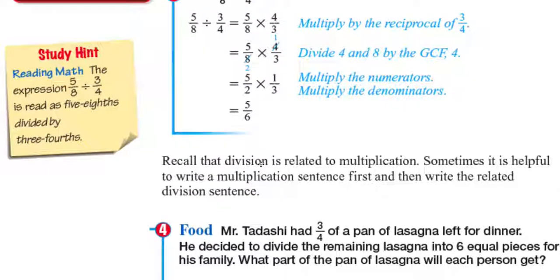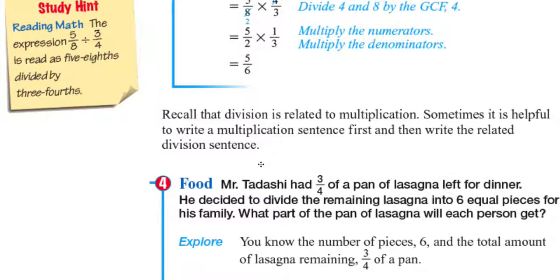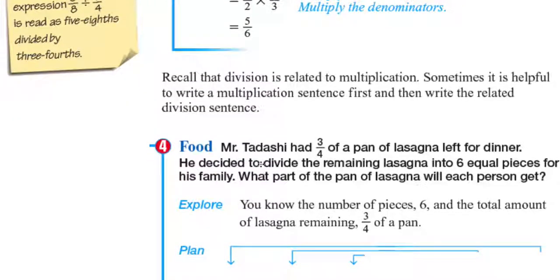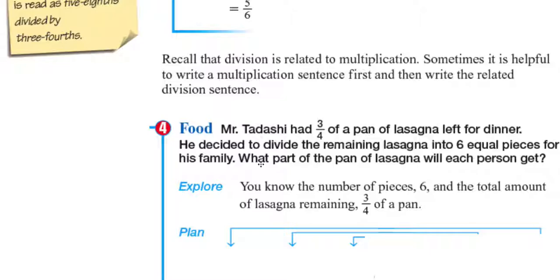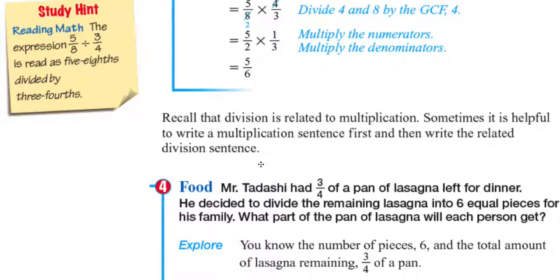Recall that division is related to multiplication. Sometimes it is helpful to write the multiplication sentence first and then write the related division sentence. Mr. Tadashi had three-fourths of a pan of lasagna left for dinner. He decided to divide the remaining lasagna into six equal pieces for his family. What part of the pan of lasagna will each person get? You know the number of pieces is six, and the total amount of lasagna remaining is three-fourths of a pan.